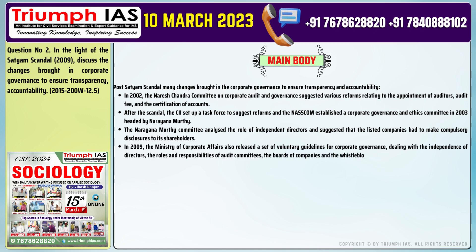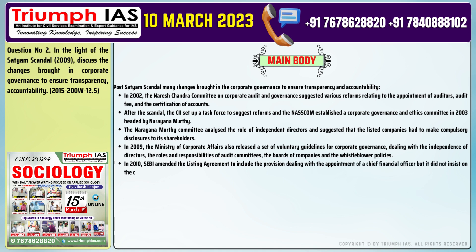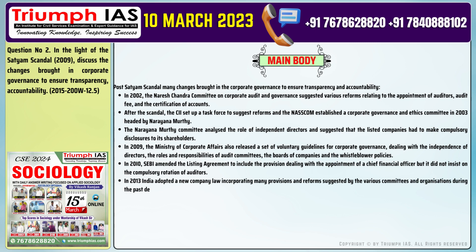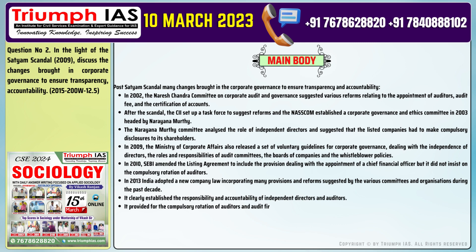Number 5: In 2010, SEBI amended the listing agreement to include a provision dealing with the appointment of a chief financial officer, but it did not insist on the compulsory rotation of auditors. Number 6: In 2013, India adopted a new company law incorporating many provisions and reforms suggested by various committees over the past decade. Number 7: It clearly established the responsibility and accountability of independent directors and auditors. Number 8: It provided for the compulsory rotation of auditors and audit firms. Number 9: It even prescribed a statutory cooling-off period of five years following one term as an auditor.